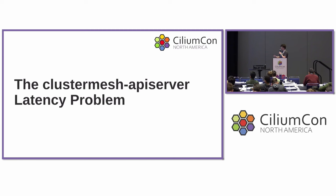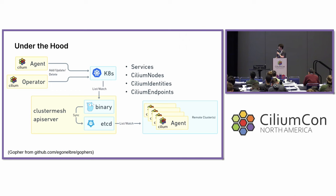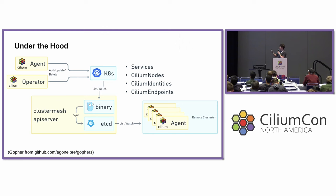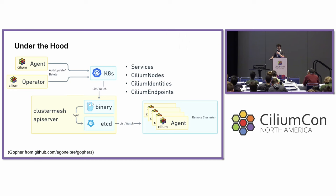So let's get into this latency problem. If we look at how Cluster Mesh API server works under the hood, in order for Selium agents to be able to intelligently talk to each other across cluster, there are four resources that need to be synced across these clusters: services, Selium nodes, Selium identities, and Selium endpoints. The agent and the operator inside of each cluster are going to modify these resources in the Kubernetes API server. The Cluster Mesh API server is going to watch for these resources and essentially clone them into its own etcd instance. This is then made available to remote CLM agents in other clusters that can pull these resources in and do that syncing, and as they get these resources they'll plumb the data path to allow that expected connectivity.